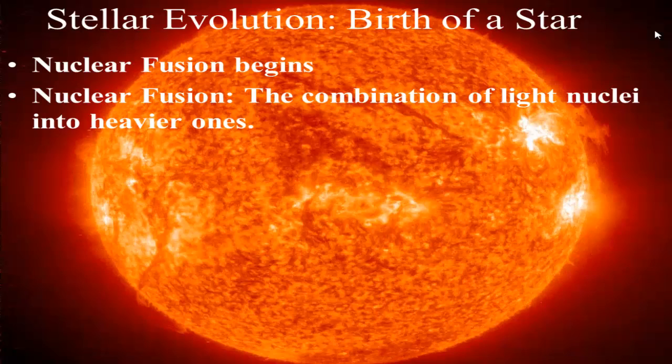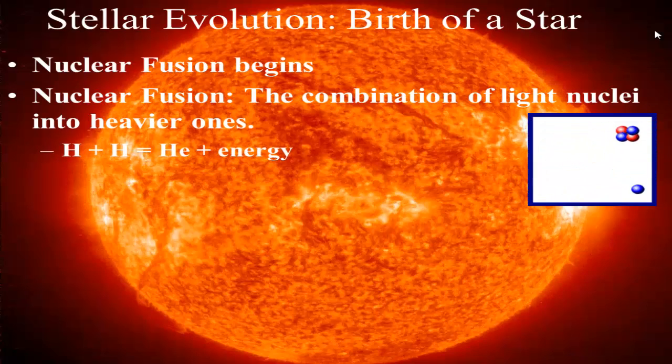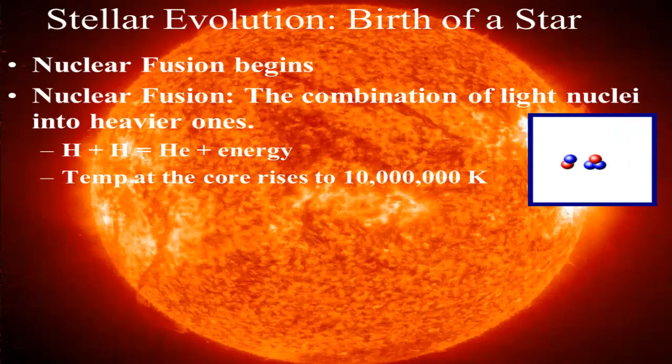In our star and most stars you have hydrogen running into another hydrogen atom and that produces helium and a lot of energy. This happens if a cloud of gas and dust has enough mass to crush its core so that it reaches a temperature of 10 million degrees Kelvin.